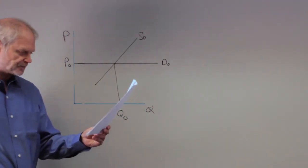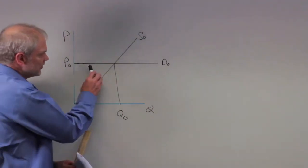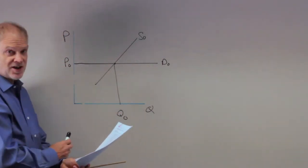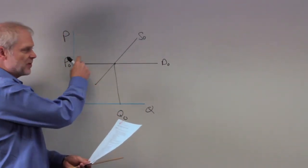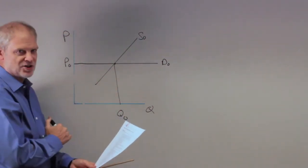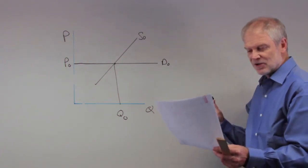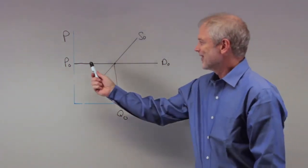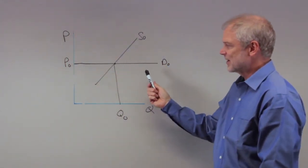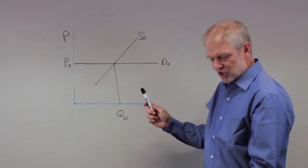(C) Quantity demanded and price change by the same percent as we move along the demand curve—that's not right, because if you change price a little bit, quantity demanded is going to change infinitely in the mathematical sense. (D) Price will rise by an infinite amount when there's a change in quantity demanded—that's going the opposite way. They've got the causality mixed up. We can eliminate C and D.